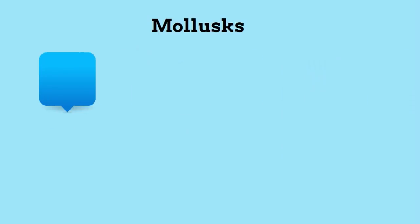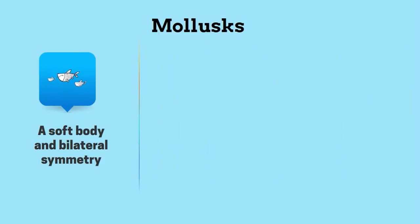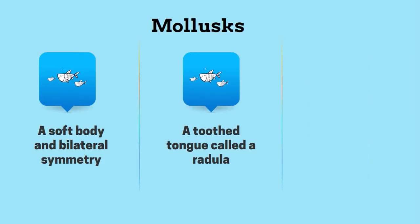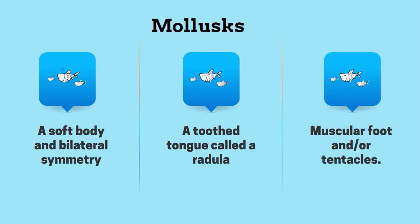All mollusks have a soft body and bilateral symmetry. Almost all have a toothed tongue called a radula, and almost all have a muscular foot and or tentacles.